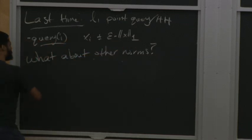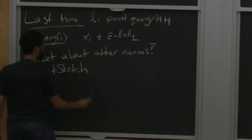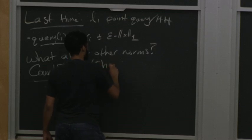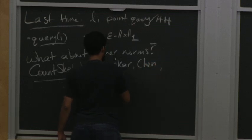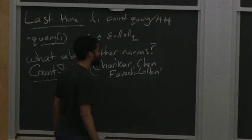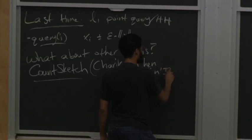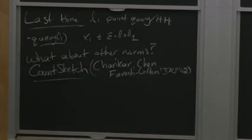So let's look at the 2-norm. There's the Count Sketch, which actually preceded the Count-Min Sketch in time. That was by Charikar, Chen, and Arch-Colton. I believe the conference version was ICALP '02, but there's a journal version later, in '04, I think.